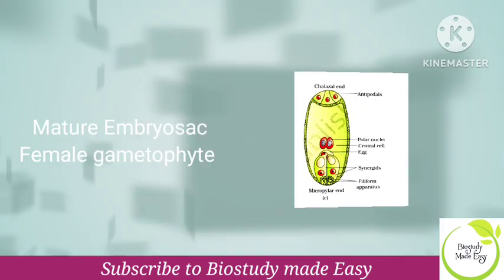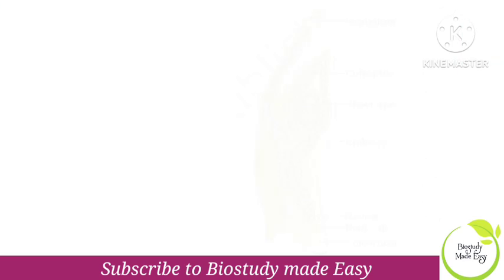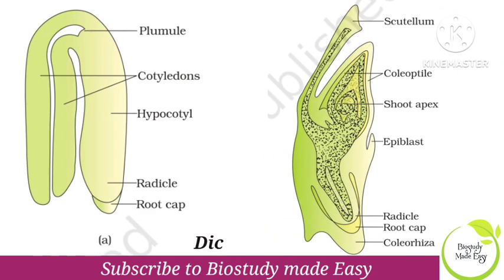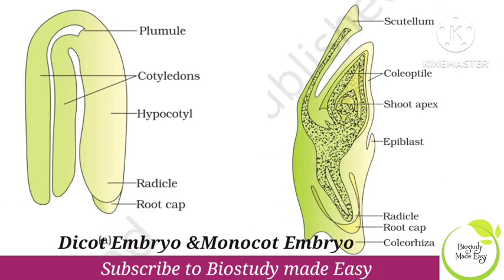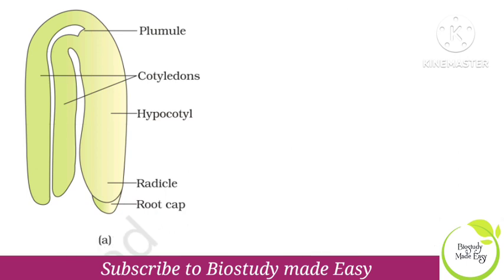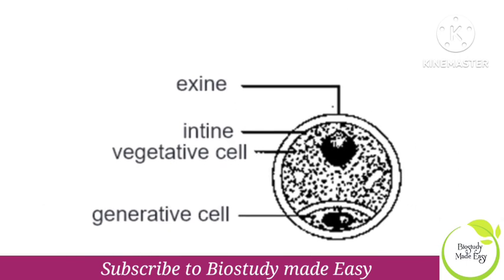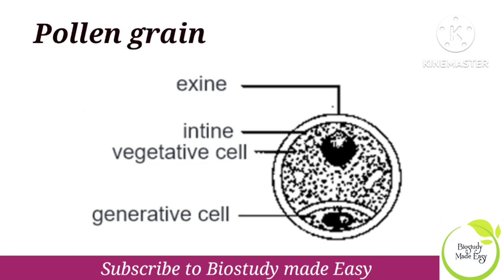Next, in this chapter, you have a question about the dicot embryo and monocot embryo — you can see three marks. This is an important diagram. You can also see the pollen grain diagram from the Sexual Reproduction in Flowering Plants chapter.